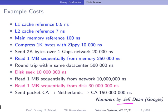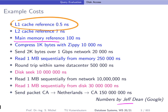These numbers are some years old already, and it's important that they give you an understanding about the relative differences between accessing data in the cache versus on hard disk. The first entry gives you half a nanosecond for L1 cache reference when accessing data in the L1 cache. Comparing this to the L2 cache, we see it's seven nanoseconds — almost a factor of ten. This is still considered reasonably cheap. If you compare this to memory references, that costs 100 nanoseconds, which is quite a big difference.